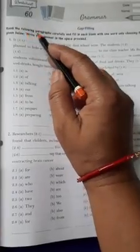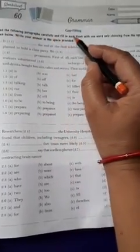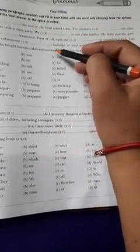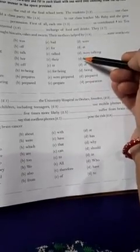Hello everyone, dear students, let us begin with worksheet 60 from your Bravia book. This is grammar part and we are going to start with gap filling. Read the following paragraphs carefully and fill in each blank with one word only, choosing from the options given below. Write your answer in the space provided.